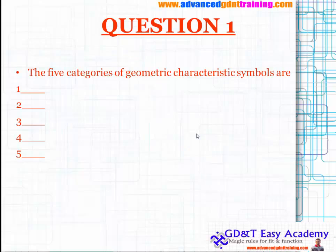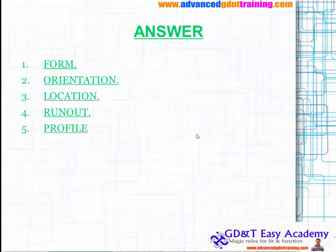Question one: the five different categories of geometric characteristic symbols are form, orientation, location, runout, and profile.